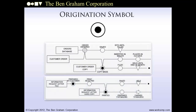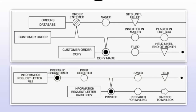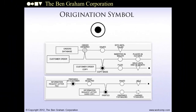The origination symbol looks something like a bullseye. It represents the first time information is entered on a document and shows value added in an information process. In these process map snippets, you see origination symbols representing a copy of a customer order being made, an electronic letter being prepared by a customer, and a copy of that letter being printed. Since it represents the first time information is entered, there can be no more than one origination symbol on a process line, and not every line will have one — some items originate before they enter the process being mapped.